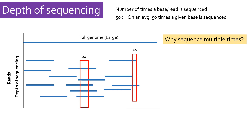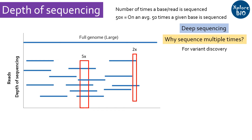Going for a higher depth sequencing, or deep sequencing, is especially important for variant discovery or identifying alleles and disease diagnosis, where you need to detect a specific mutation which is in low frequency in the sample. Having it sequenced multiple times gives you more reads, and greater are the chances that each allele, variant, or mutant is sequenced.